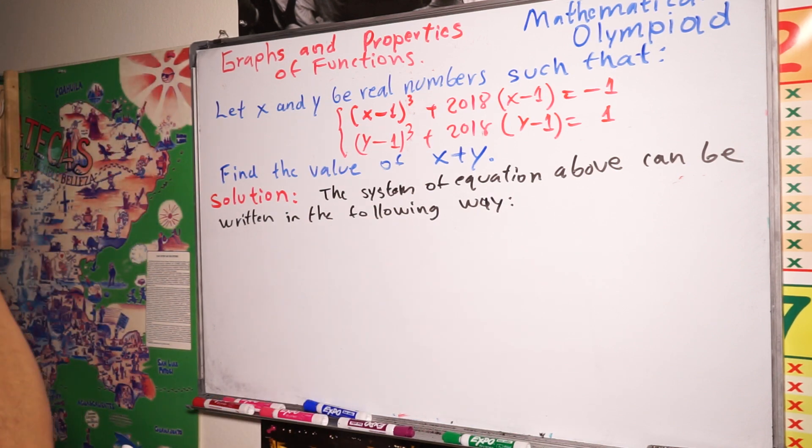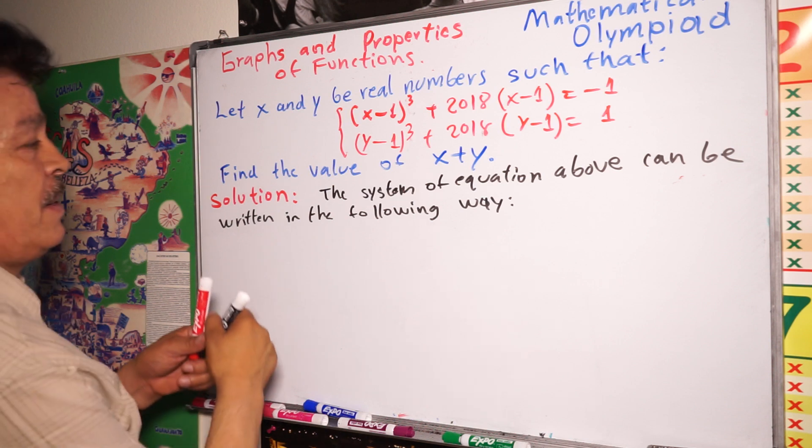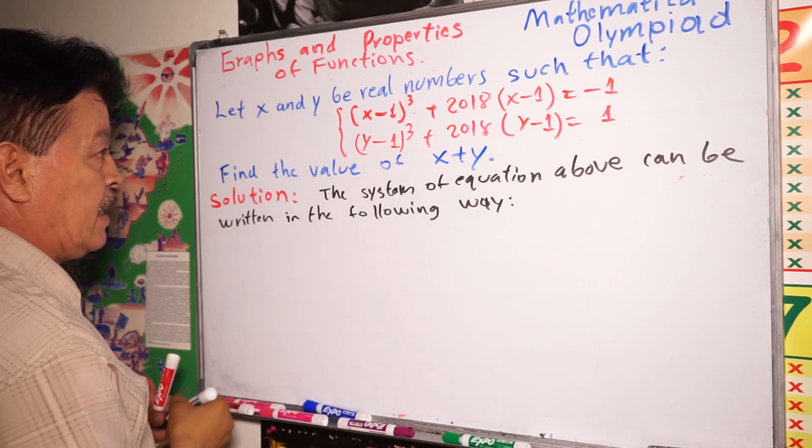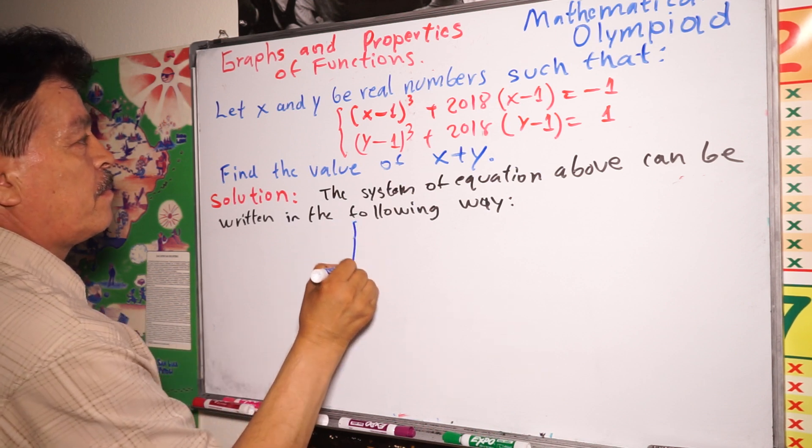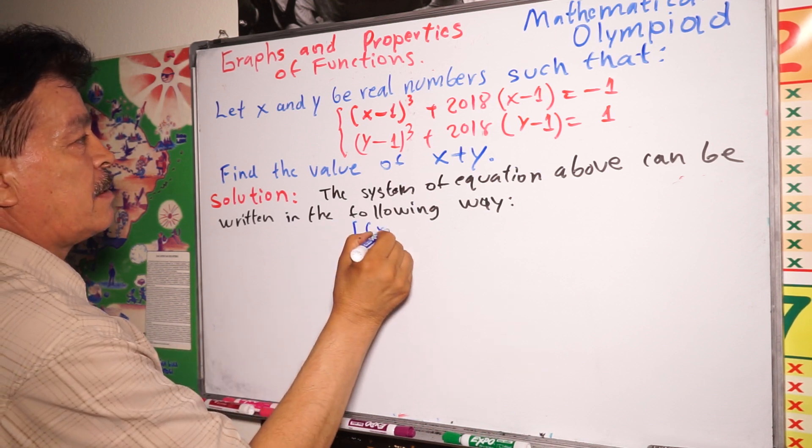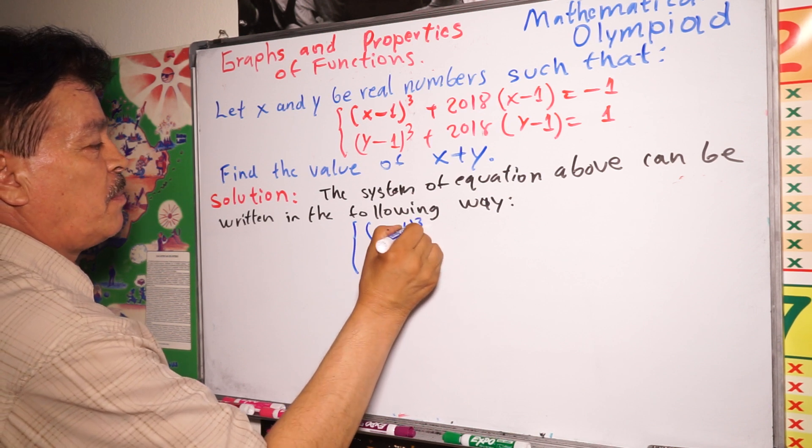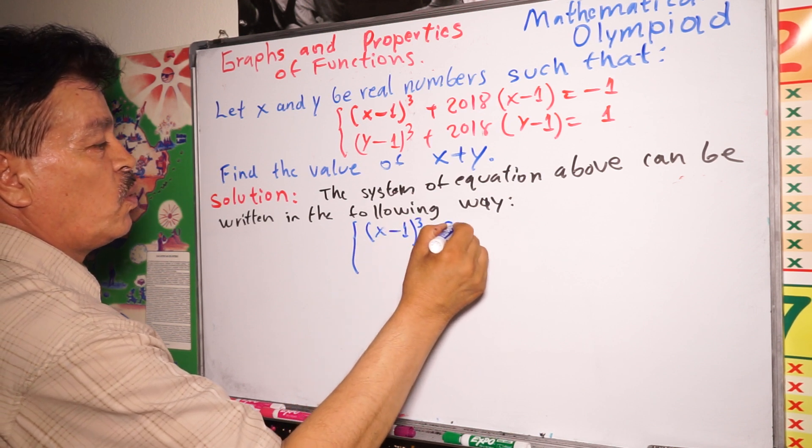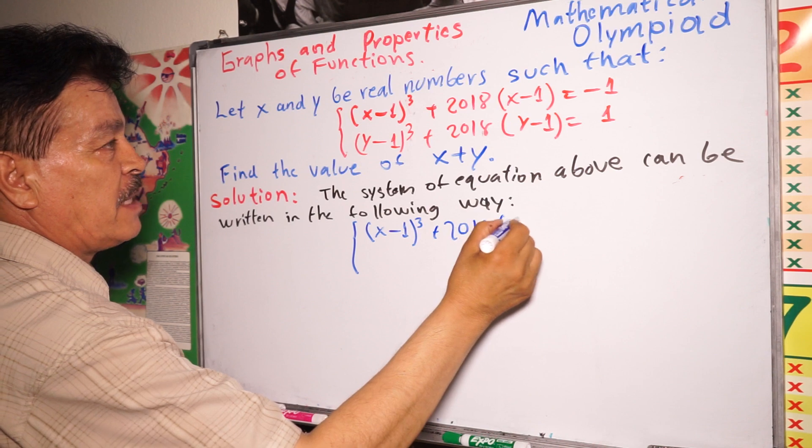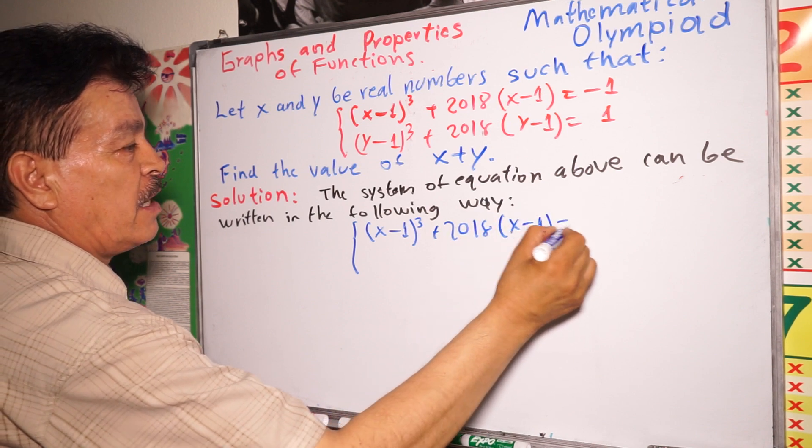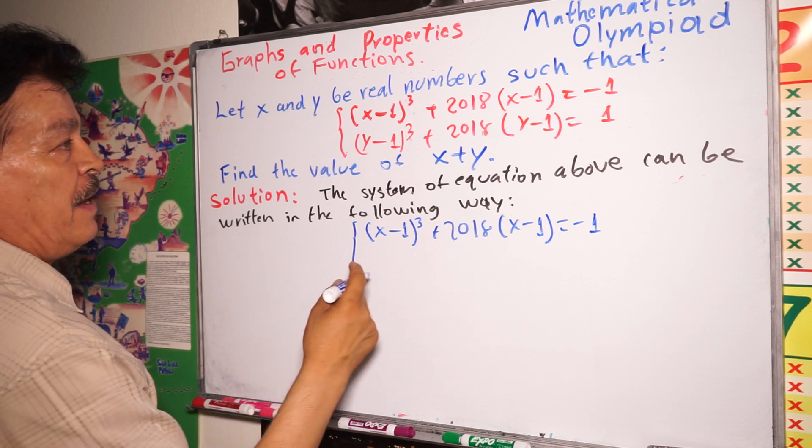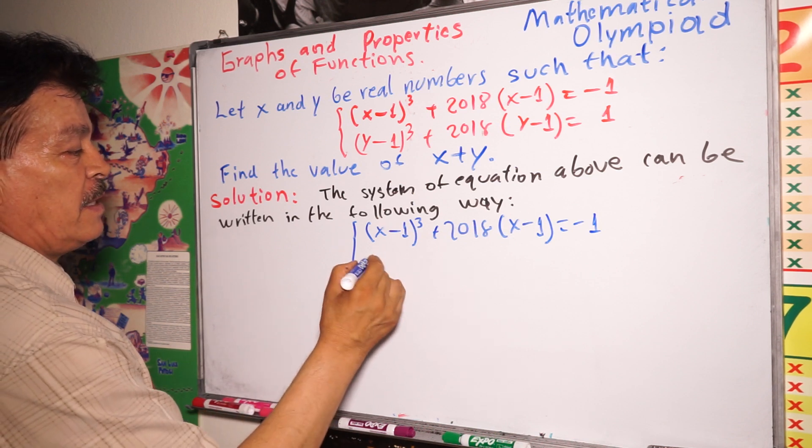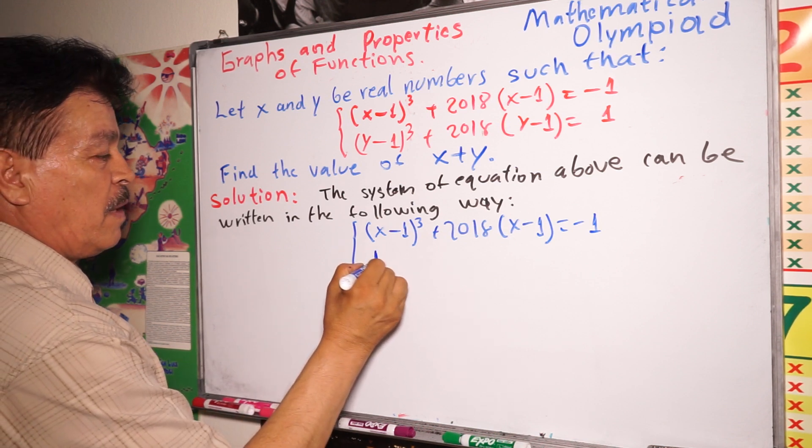So (x-1)³ + 2018(x-1) = -1. And the second one, just write this in this way.